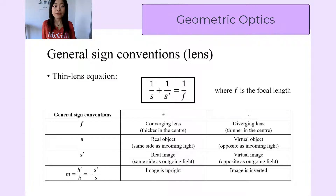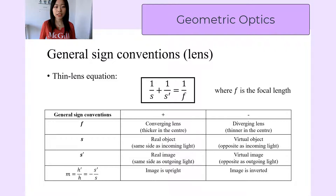You can pause the video here to take a screenshot or take some notes for yourself. For a thin lens, we have the thin lens equation, which describes the relationship between the object distance, image distance, and the focal length.